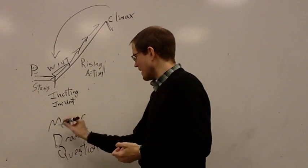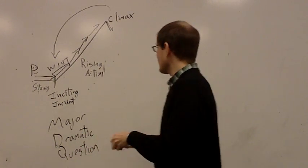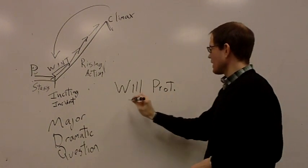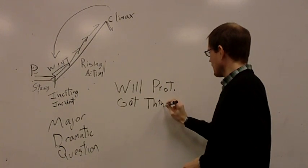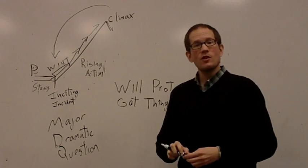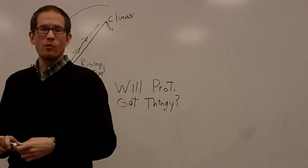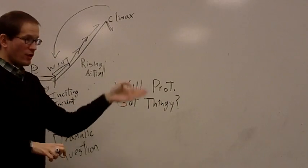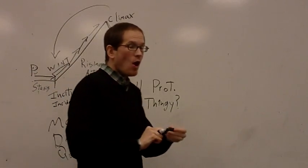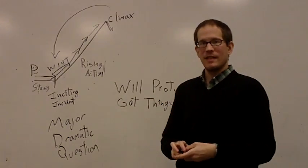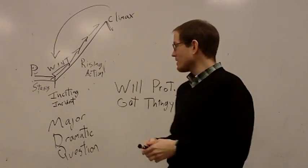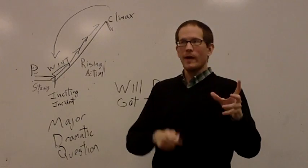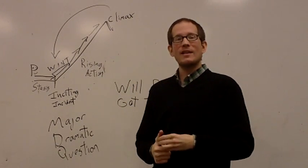Or if we get lazy, we can just call it the MDQ. And all it is, is that statement, will the protagonist get the thingy? And the thingy is whatever they want. So for every play, every movie, there is a major dramatic question like this. Will the protagonist get the thingy? Will the guy get the girl? Or will the girl get the guy in a romantic comedy? Will Oedipus get the murderer in the city of Thebes? No matter what movie or play it is, if it's well made, it's got one of these. And it's always very simple. Very sort of first grade simple. Will X get Y? That's what we call the major dramatic question.